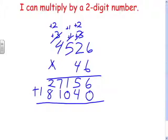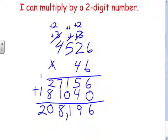Get the sum of those two: six plus zero is six; five plus four is nine; one plus zero is one; seven plus one is eight; two plus eight is ten; one plus one is two. Two hundred eight thousand one hundred ninety-six. If you can do that, you're well on your way to multiplying any number by a two-digit number.